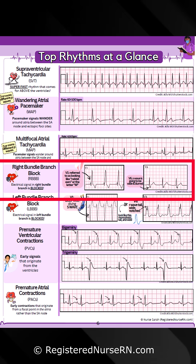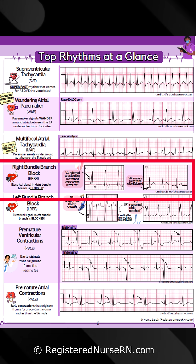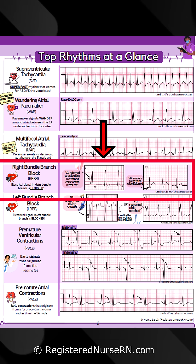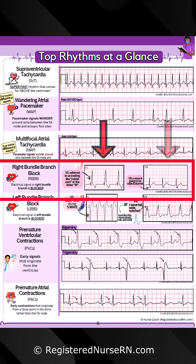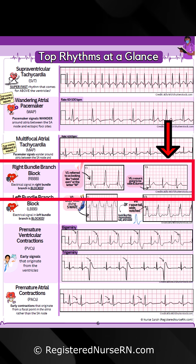Right bundle branch block is where electrical signals in the right bundle branch are blocked. Pay attention to V1 — it's sometimes referred to as looking like rabbit ears, or the letter M, like in this example. And look at V6, where the S wave is going to be wide and slurred.